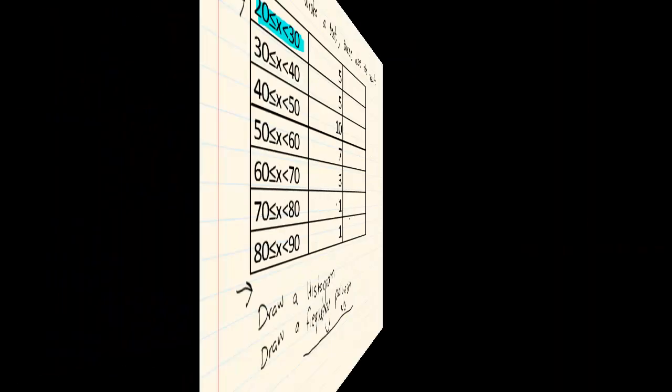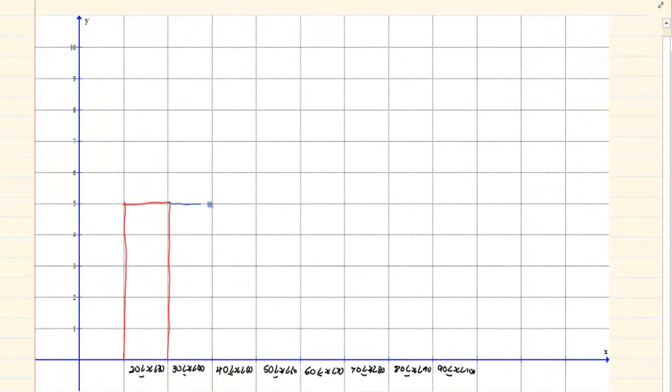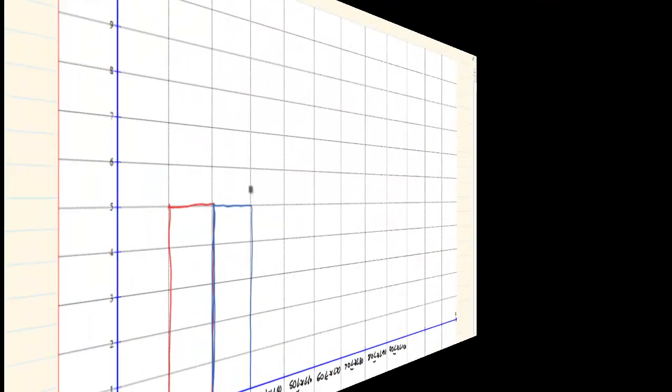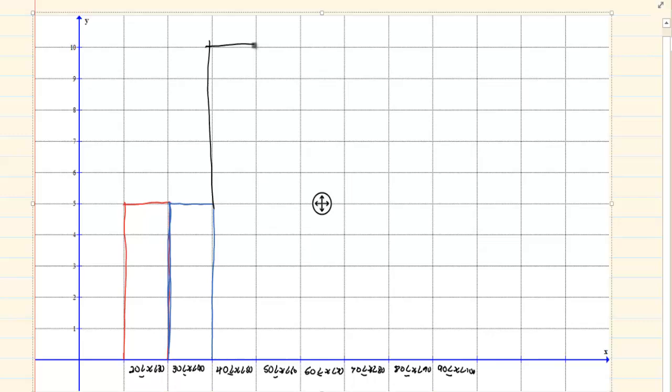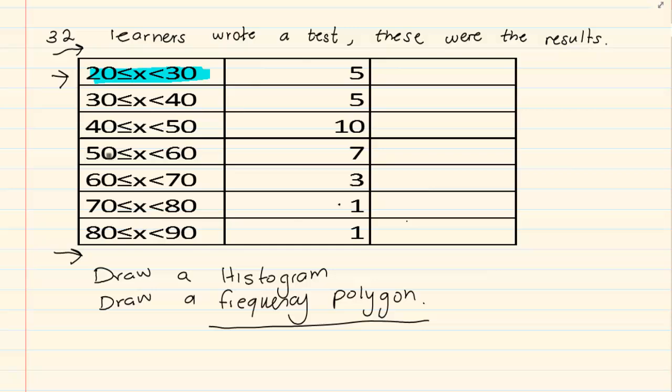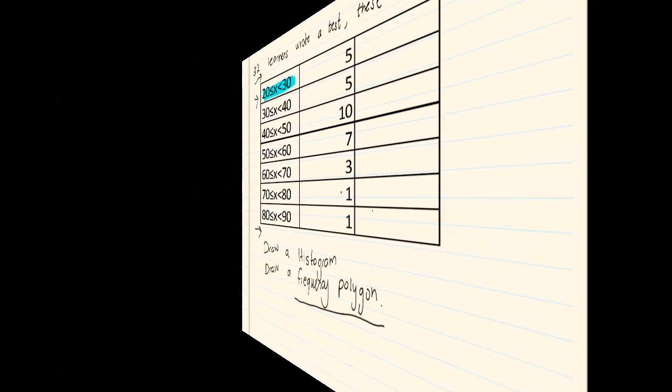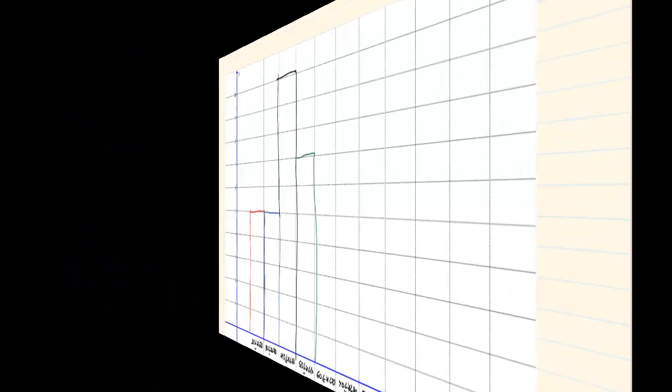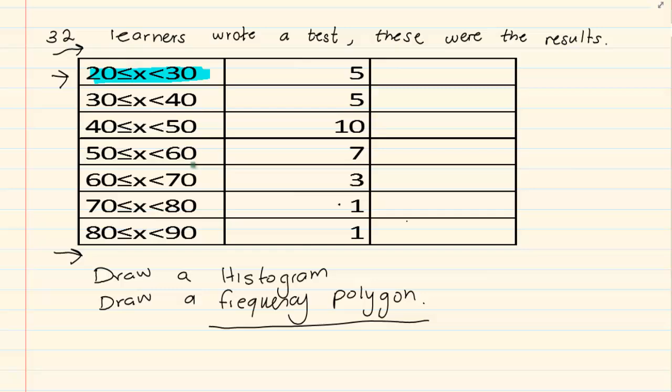Then 30 to 40 was also 5. But look, no spaces between them. Immediately next to each other. Can you see? Unlike a bar graph where there were spaces between each other. Then we have 40 to 50, go up to 10. And 50 to 60, go up to 7. 60 to 70, go up to 3.